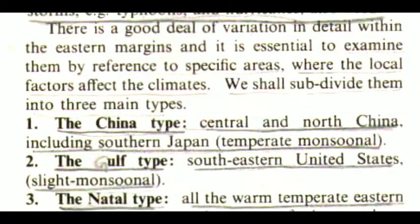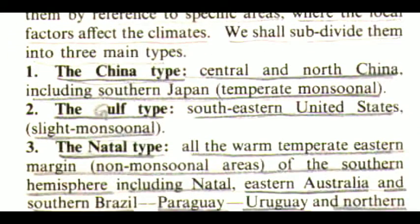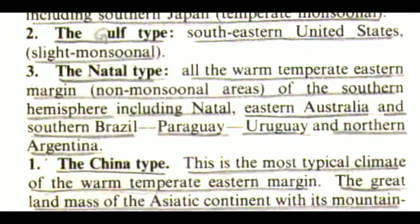The first one is the China type — Central and North China including southern Japan, temperate monsoonal. The second one is the Gulf type — Southeastern United States, slight monsoonal. And the third one is the Natal type — all the warm temperate eastern margins, non-monsoonal areas of the southern hemisphere, including Natal, eastern Australia, and southern Brazil, Paraguay, Uruguay, and northern Argentina.